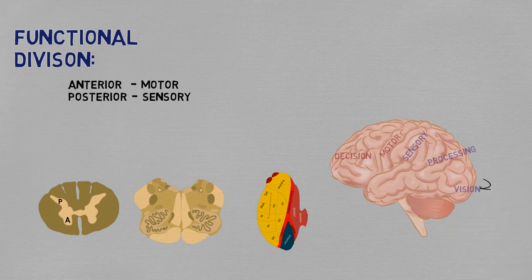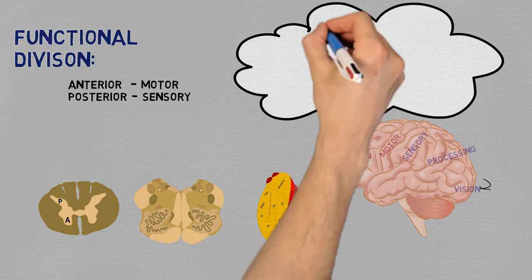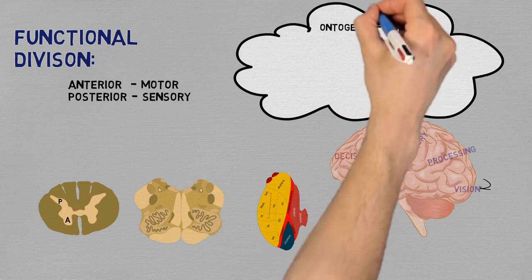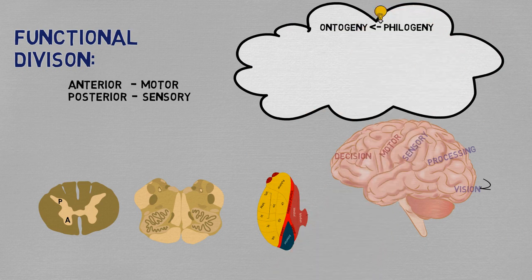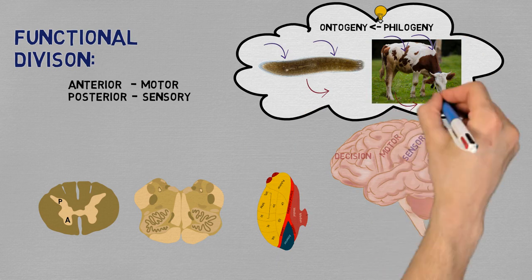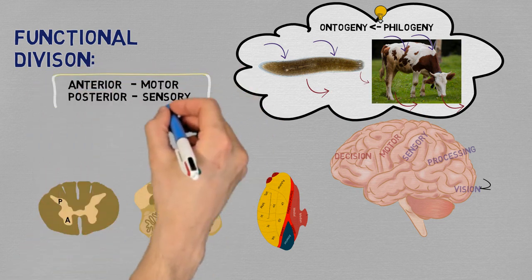This anterior-posterior relationship is easier to understand when you remember embryology and evolution. As the saying goes, ontogeny recapitulates phylogeny — that is, the development of the embryo shares phases with the development of evolutionary ancestrals. In simpler animals, such as the planaria, or even four-legged invertebrates, the posterior or dorsal part of the body is the part exposed to the external environment and receives sensory stimuli, whereas the anterior or ventral part is the one that has the limbs for movement and the mouth for feeding. With that, this relationship is formed and conserved even in humans.